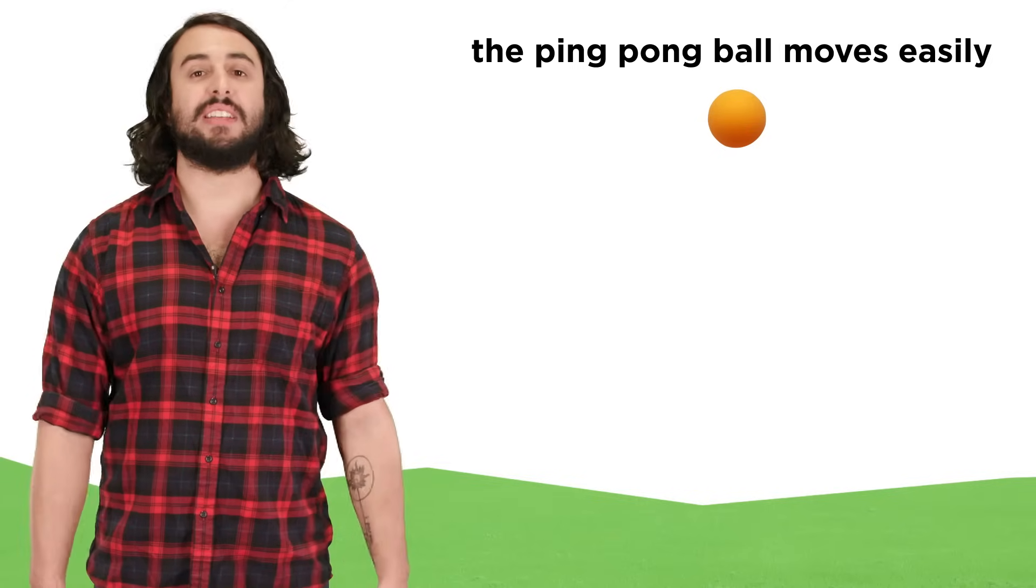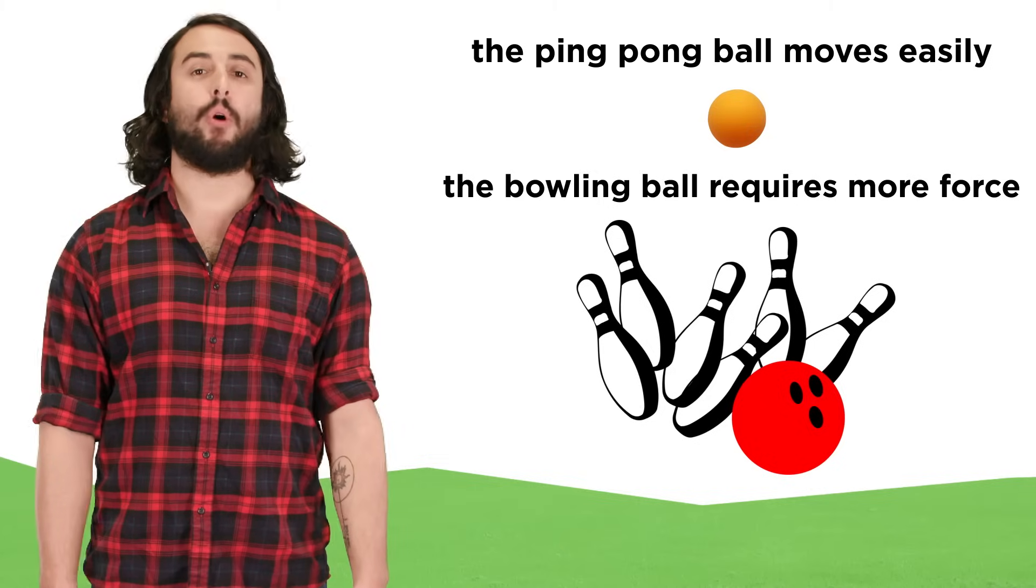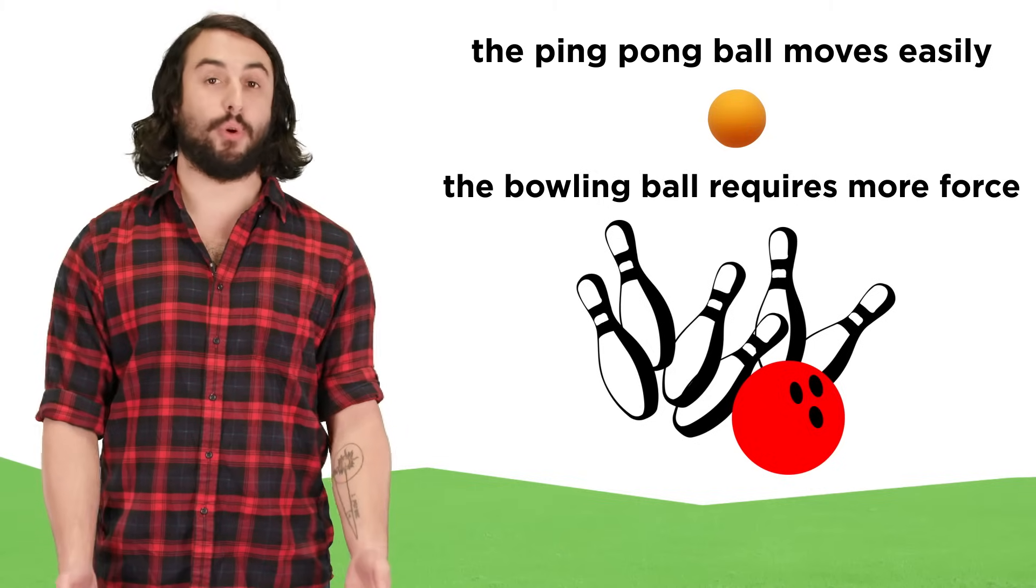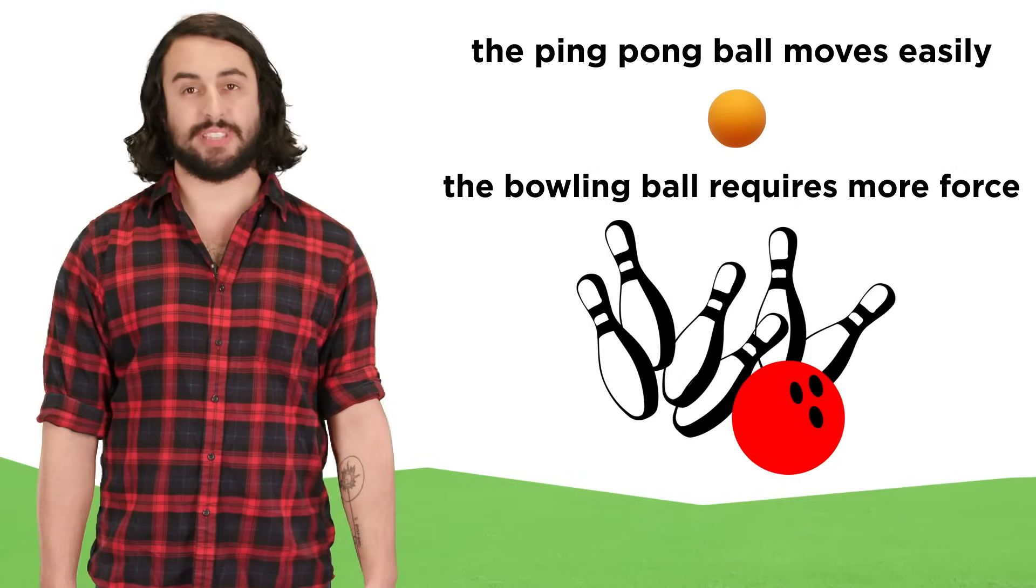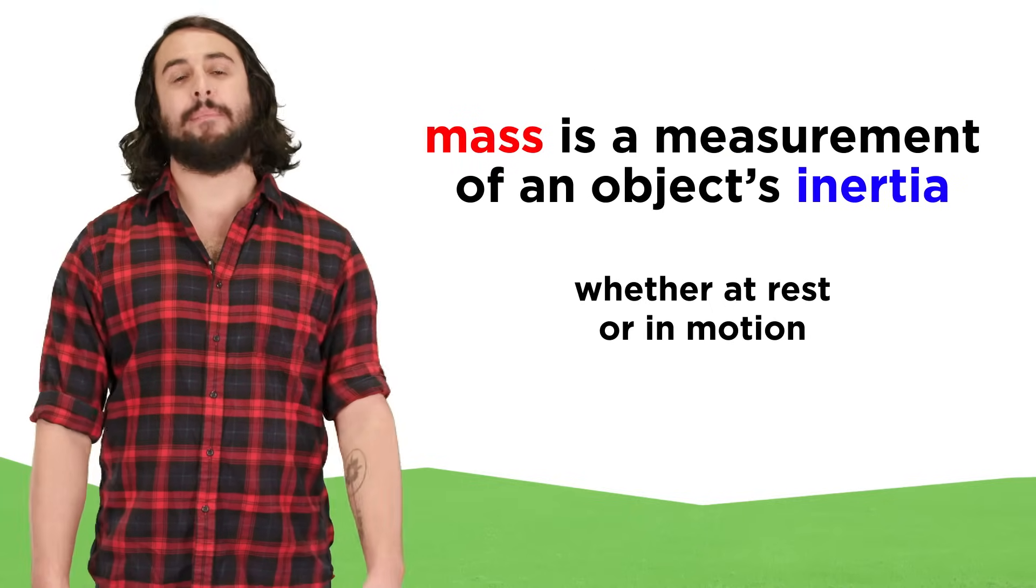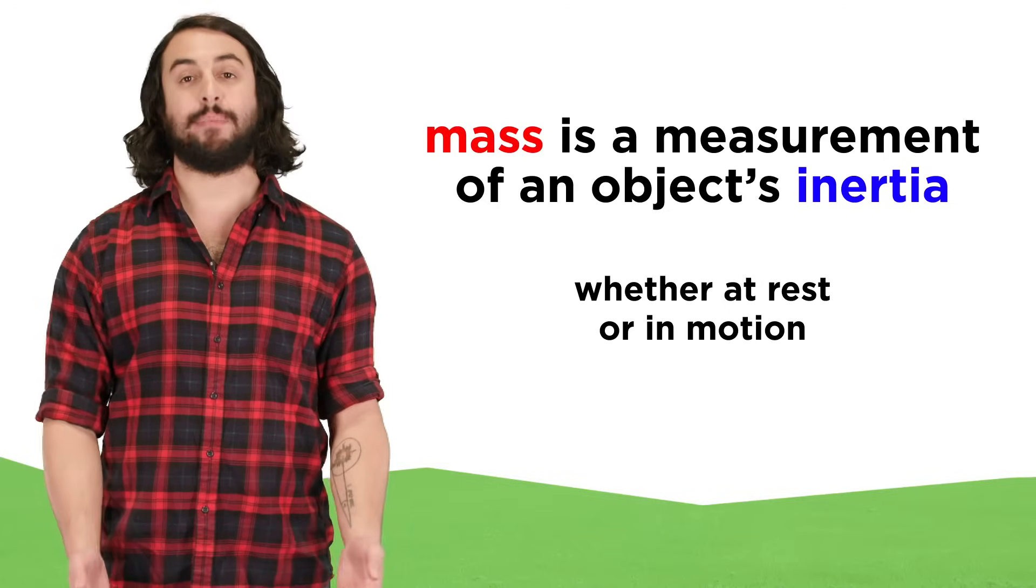Similarly, it is easy to set a ping pong ball in motion, just give it a flick. But a bowling ball will need quite a bit more force, and more force to stop as well, as any bowling pin will tell you. In this way, mass is essentially a quantitative measure of an object's inertia.